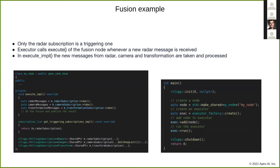Here are some examples of how this could look. On the left-hand side we see the node implementation, on the right-hand side our main. We have the fusion example here. The radar is the triggering subscription, so our get_triggering_subscriptions call will return the radar subscription. In the execute implementation, we can now take all the messages from all subscriptions and process them. On the right-hand side, we can create a node, create an executor, add the node to the executor, and the run call is like the spin call in ROS2. The execute method will always be called whenever a new radar message arrives.